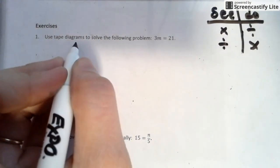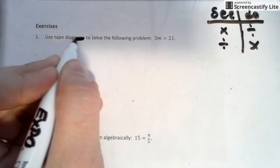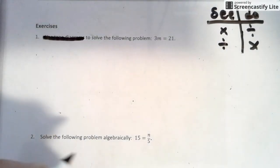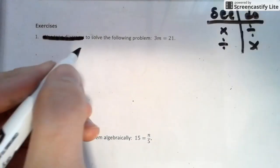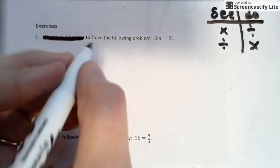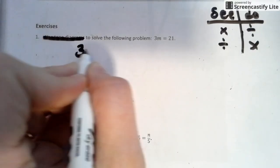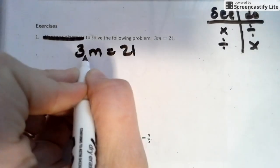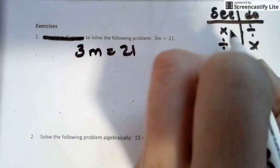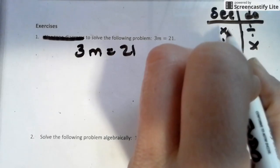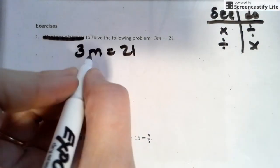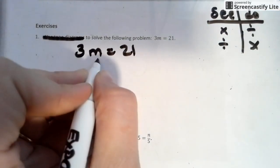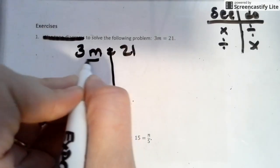Use tape diagram to solve the following. We're not going to use tape diagram. We're just going to do it algebraically, because that's what you're going to do in high school, that's what you're going to do in seventh grade, that's what you're going to do in eighth grade. So 3m equals 21. When there is no sign, that means times. The opposite of timesing is dividing. Opposite of the multiplication is the division. There's our line. We're going to divide by 3.